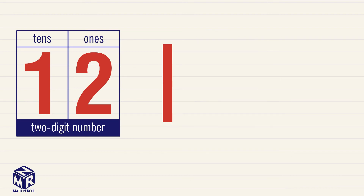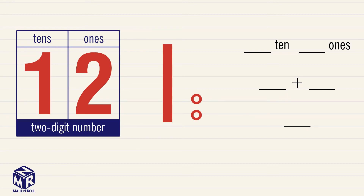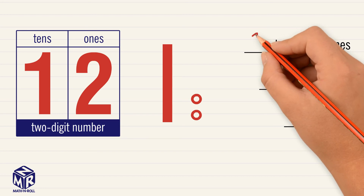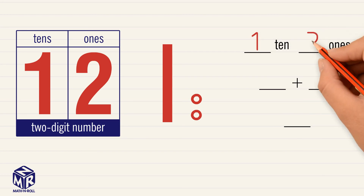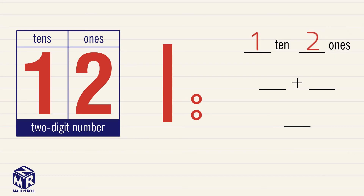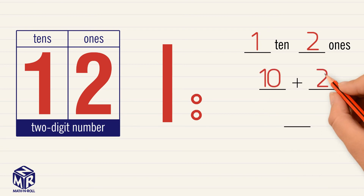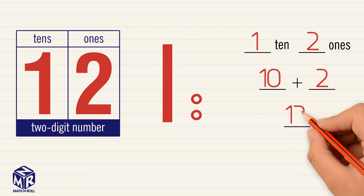Let's write 12 in three different ways. Take a look at the model. We have 1 bar, or 1 ten, and 2 circles, or 2 ones. So we can write 12 as 1 ten and 2 ones. We can also write 12 as 10 plus 2, or 12.